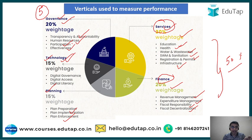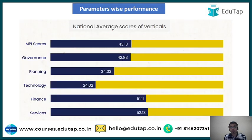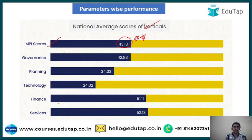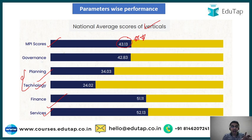Looking at vertical-wise national average performance under the Municipal Performance Index: the national average score is 43.13 — mark this as very important for exams. Services and Finance have fared the best among all verticals. Technology and Planning are the two worst-performing verticals, where municipalities have significant scope for improvement and must focus to increase their scores.